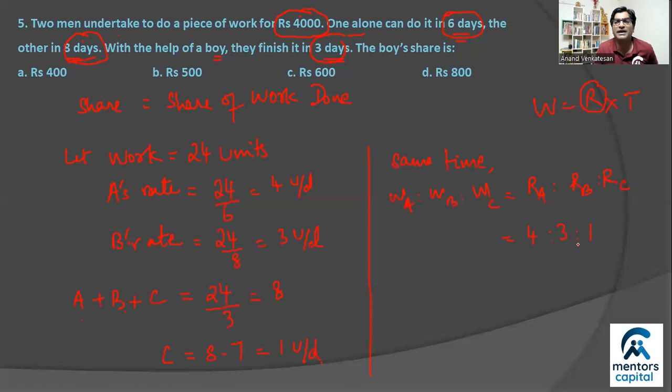So boy's share is actually one part out of 4 plus 3 plus 1 that's 7 units. This much share the boy should get in 4000 rupees. So that's one seventh of 4000, that is nothing but 500 rupees. So boy's share will be 500 rupees. The remaining 3500 both people will share.